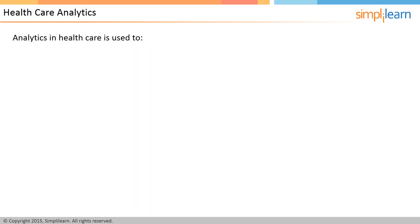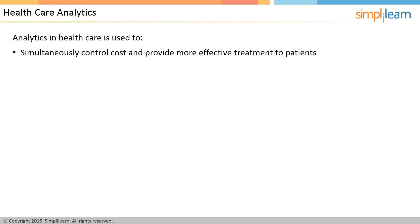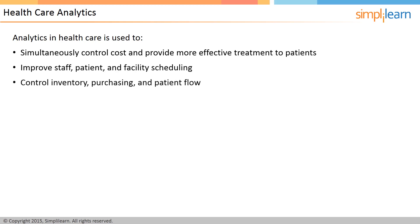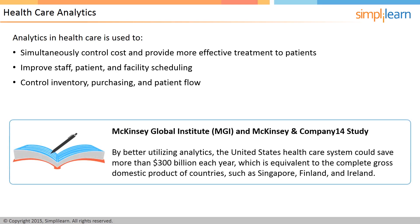Analytics in healthcare is used to simultaneously control costs and provide more effective patient treatment. Predictive, prescriptive, and descriptive analytics improve staff, patient, and facility scheduling, and control inventory, purchasing, and patient flow. According to a McKinsey Global Institute study, better utilization of analytics could save the US healthcare system more than $300 billion each year — equivalent to the entire GDP of countries such as Singapore, Finland, and Ireland.